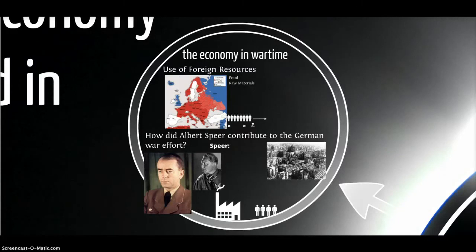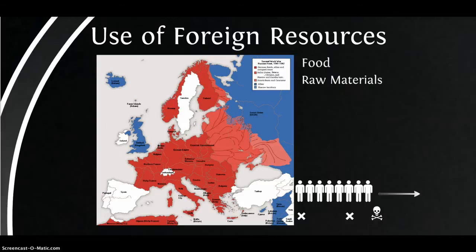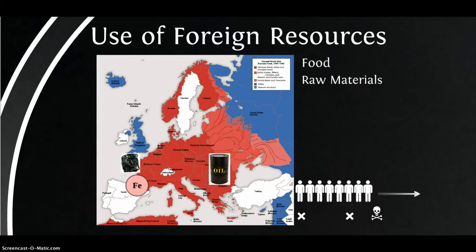Let's look at the economy in wartime and what efforts were made by the Nazis to keep the economy going. They made use of food and raw materials from conquered territories — coal and iron from France, oil from the oil fields of Romania, which was an ally of Germany, though it wasn't enough to supply the needs of the German army and industry. Wheat was obtained from southern Russia. They were also able to use the industries of France and Belgium and convert those into industrial production for the German war machine, and they seized a large amount of military equipment from the French.